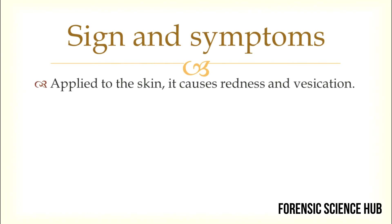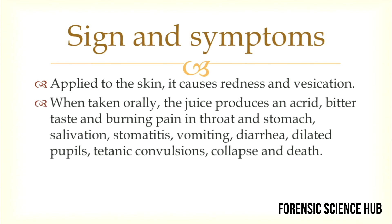Next come the signs and symptoms of Calotropis procera poisoning. When the juice is applied to the skin, it becomes red in color with formation of blisters. We can see blisters, redness, and vesication when Calotropis procera juice is applied to the skin.